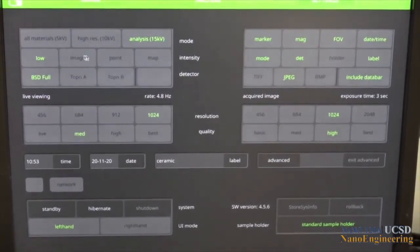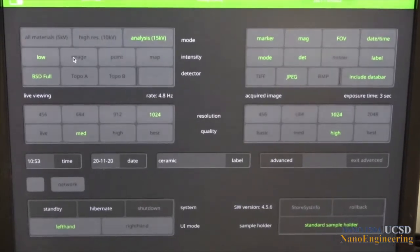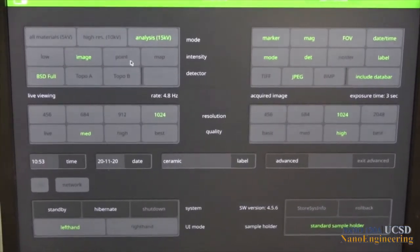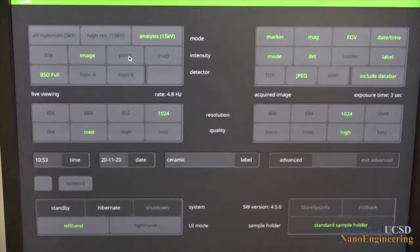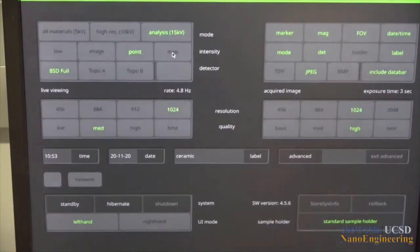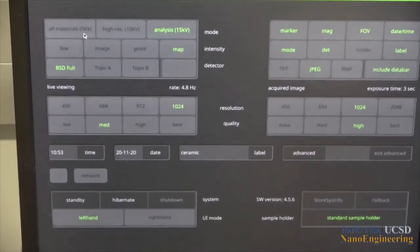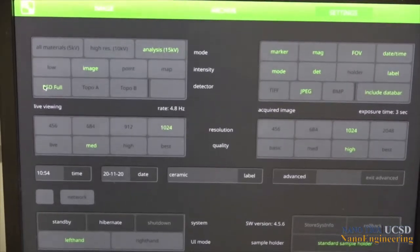The boxes labeled intensity control the beam current and spot size in the SEM. Low provides a lower beam current and spot size for samples which may be beam sensitive or experience charging effects. It can also be used for high resolution imaging. Image uses a higher current larger beam size for most types of imaging. Point and map select high and maximum beam currents for X-ray analysis.